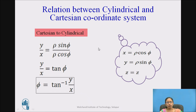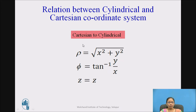One relation we got for rho. For the second coordinate phi: phi is available in those two equations, so if I divide y by x, I get rho-sin-phi over rho-cos-phi. Rho cancels out and sin upon cos is tan-phi. So phi is tan-inverse of y by x. Z remains the same. Therefore, the cartesian to cylindrical relations are: rho equals the square root of x-square plus y-square, phi equals tan-inverse of y by x, and z equals z.